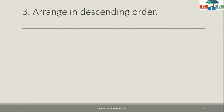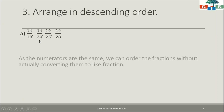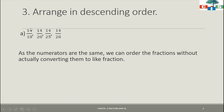Now we'll start with question number 3 of exercise 6.3 — arrange in descending order. The first question we have is 14/18, 14/20, 14/25, and 14/28. We have to arrange this set in descending order, which means from the largest fraction to the smallest fraction. Here we can see that all the numerators of the given fractions are the same, so we don't have to convert this set into like fractions — we can directly order them into descending.